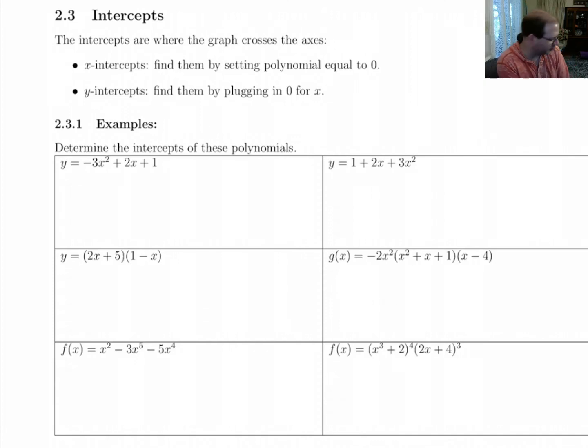Alright, continuing with polynomials, let's find the intercepts of these polynomials. The x-intercepts are the places where they cross the x-axis, and you find that by setting the polynomial equal to zero and solving. And the y-intercepts you get by plugging in zero for x. So just for this first one, let's look at it.